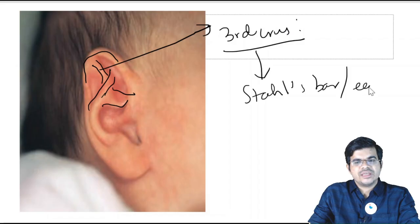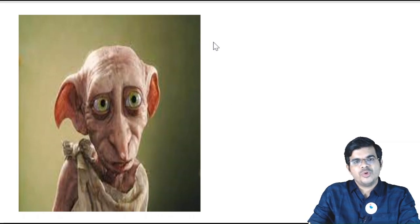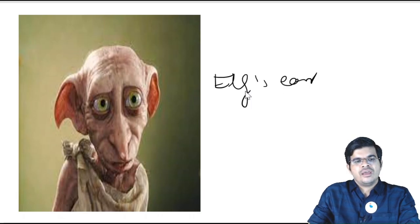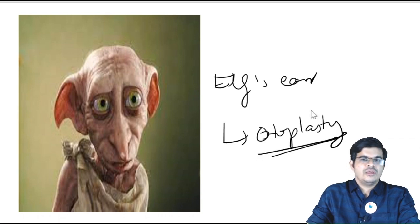It is called Stahl's bar — Stahl's bar, or Stahl's ear, or it is also known as Elf's ear. And for all these ear anomalies, what you do is you can do an otoplasty, that is the plastic surgery of the pinna.